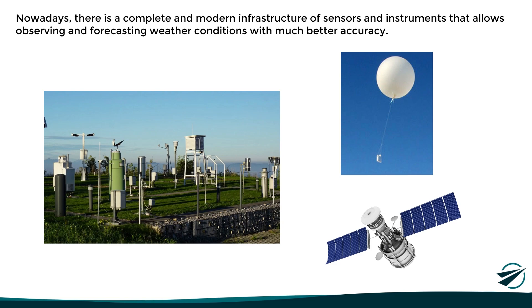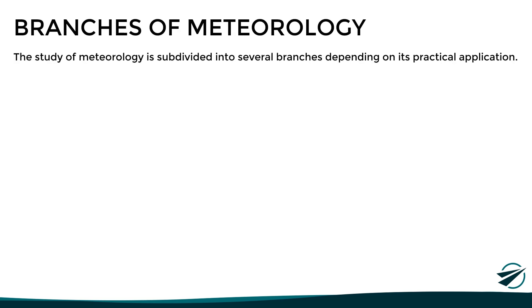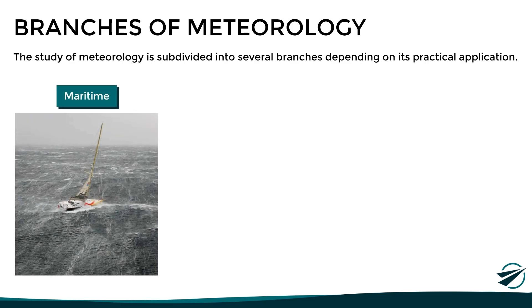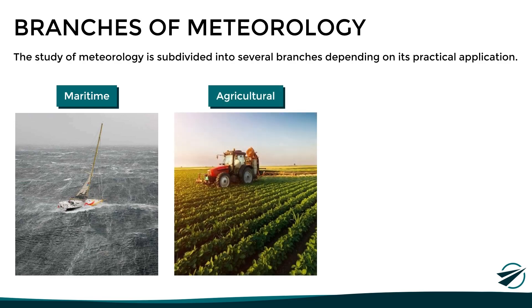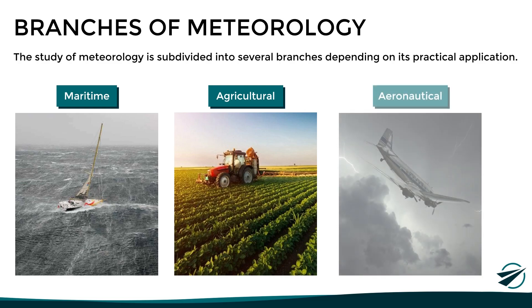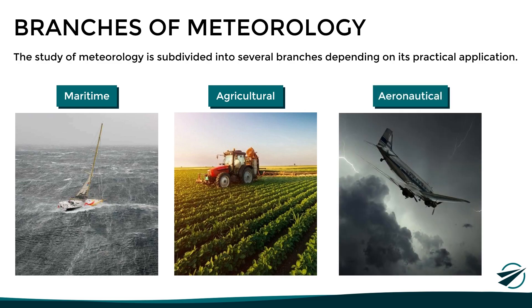It is important to mention that not all meteorological reports and forecasts are the same, since meteorology is subdivided into different branches depending on its practical application. For example, maritime meteorology focuses mainly on phenomena and variables that affect the navigation of vessels. There is also agricultural meteorology, which focuses on atmospheric conditions that affect crops. And obviously, we also have aeronautical meteorology, which focuses specifically on the phenomena and conditions that can affect air operations.